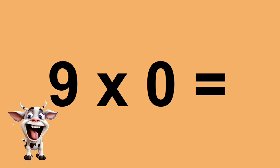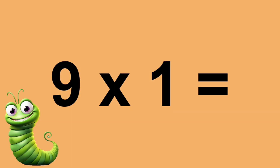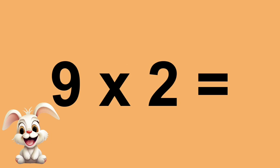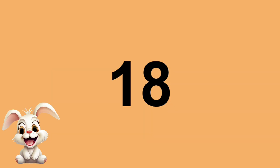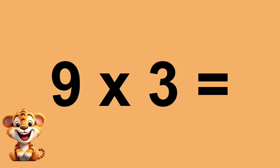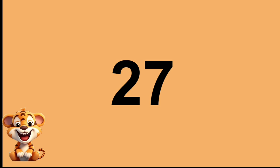Nine times zero equals zero. Nine times one equals nine. Nine times two equals eighteen. Nine times three equals twenty-seven.